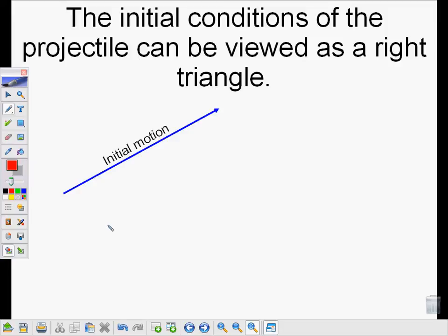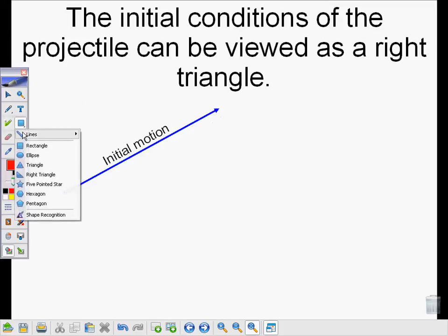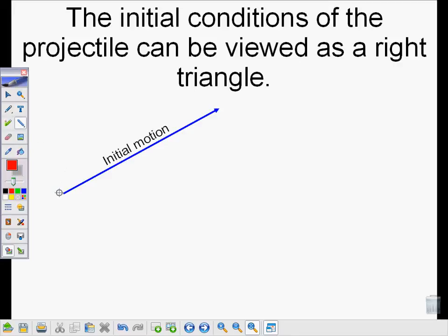The initial conditions of a projectile can be viewed as a right triangle. So let's say that this vector here describes the motion of our projectile. I can turn that into a right triangle by dropping a vertical line down from the end of the vector and then connecting that with another side from the beginning of the vector to create a right triangle.